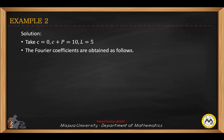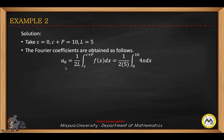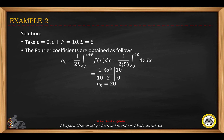The Fourier coefficients will be obtained as follows. We define a sub zero to be 1 over 2l from c to c plus b of f(x) dx. Since l is 5, we integrate 1 over 10 of 4x dx. Integrating from 0 to 10 gives you a sub zero equals 20.